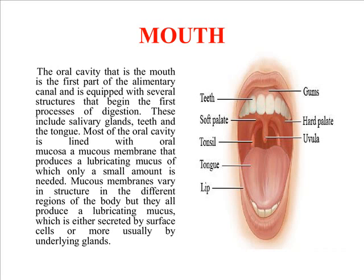The mouth contains teeth, gum, soft palate, hard palate, tonsil, lip, tongue, and other small components which are equipped for the digestion of food material.